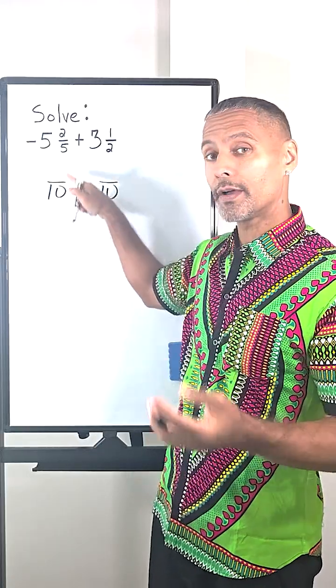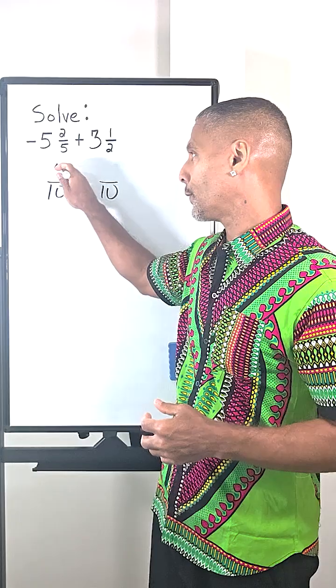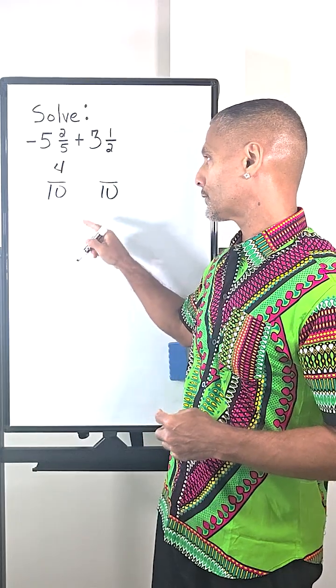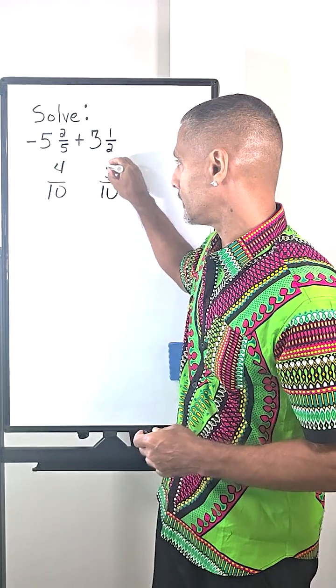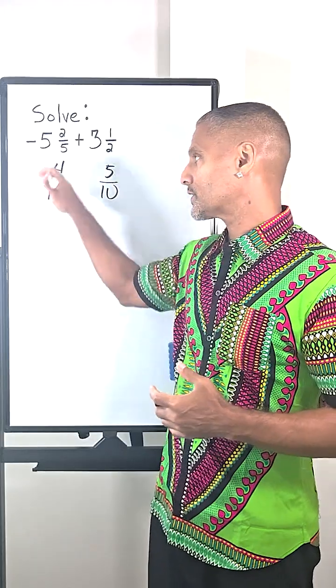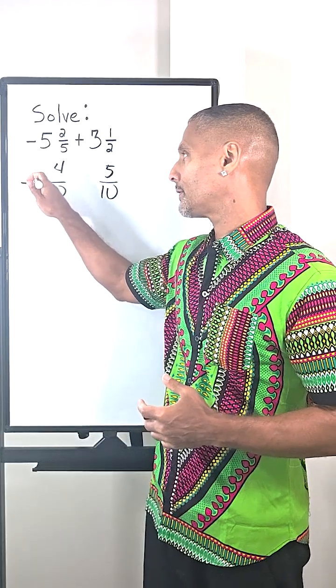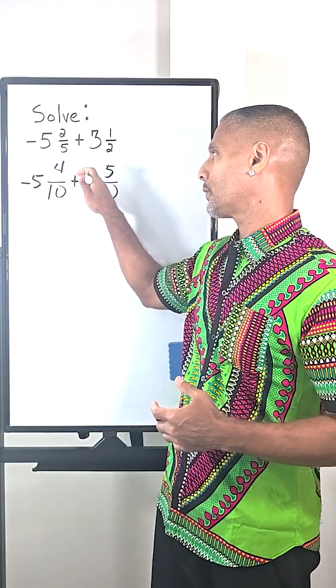All right, because we doubled the five, we doubled the two, and that is going to give us a four. And of course, we have to write five on the top of 10 because five is half of 10. And then we just slide down our negative five here and our plus three here.